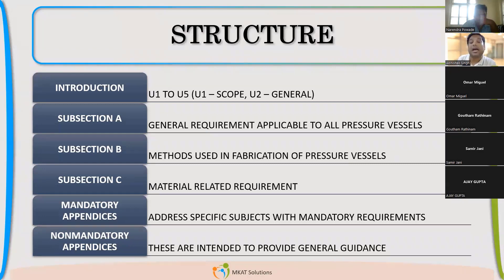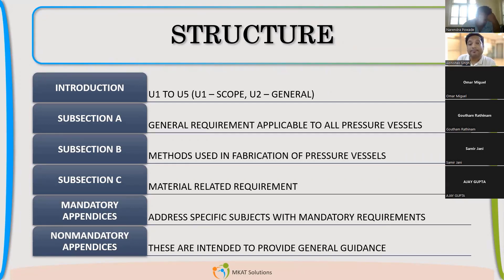Non-mandatory appendices contain procedures identified by ASME that are considered good. They are reviewed, and after 10 or 15 years of operation — if found to be working well — they may be included in mandatory appendices. So it is an available methodology which we can directly pick, and it is always beneficial as a designer. This is the main structure of the code: introduction, subsection A, subsection B, subsection C, mandatory and non-mandatory appendices.